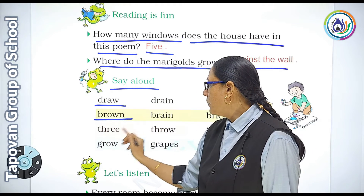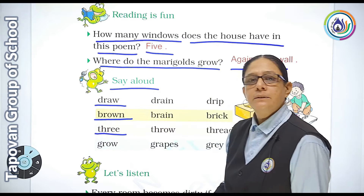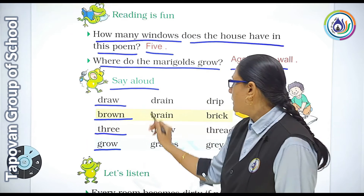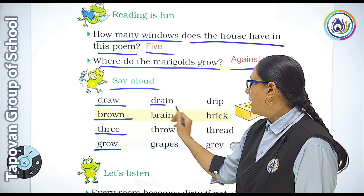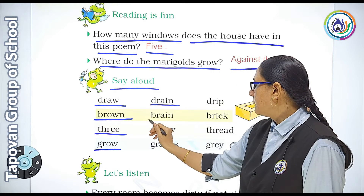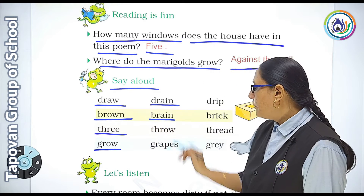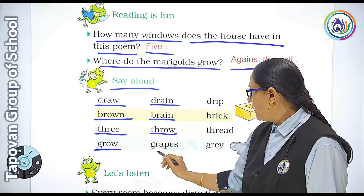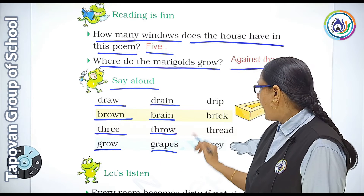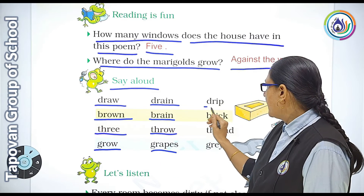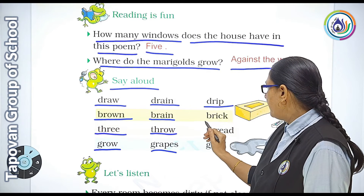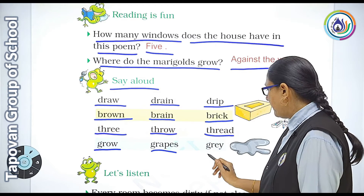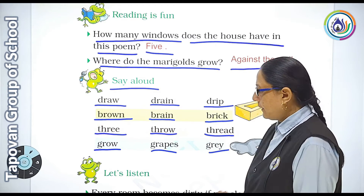Word sounds practice: brown, three, grow, drain, brain, throw, grabs, drip, break, three, gray.